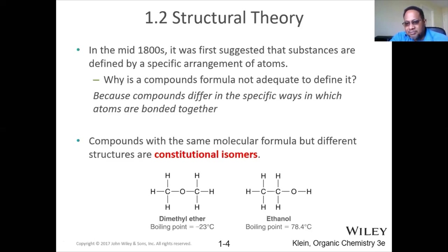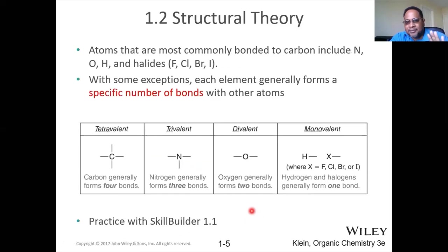So different molecules will have different physical properties, also different chemical properties. So if you notice on the far left, we have dimethyl ether. It has a boiling point of minus 23. Ethanol, that has the same molecular formula, but different connectivity, has a boiling point of 78.4 degrees Celsius. So that's as it relates to the structural theory.